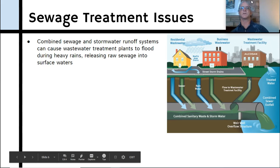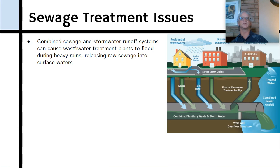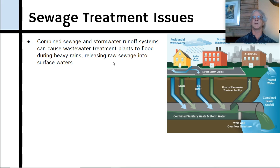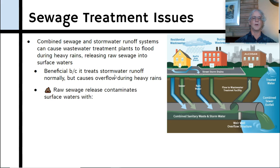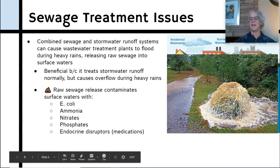Sometimes there are problems such as combined sewage and stormwater runoff, where stormwater goes into the same sewer pipes. In most of LA, stormwater drains and sewer drains are separate, but in some locations both go into the same pipes. When that happens during heavy rains, it releases raw sewage because treatment plants like Hyperion can't handle all the water at once. Combining them can be beneficial because it treats stormwater runoff normally — handling cat poop, dog poop, and other waste before it reaches the ocean. However, if raw sewage is released, it contaminates surface waters with E. coli, ammonia, nitrates, phosphates, and endocrine disruptors.